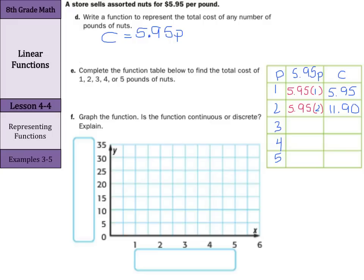Three pounds is going to be $5.95 times three, which results in $17.85. Four pounds will be $5.95 times four, which is equal to $23.80. And lastly, for five pounds, we have $5.95 times the five pounds of nuts is $29.75.